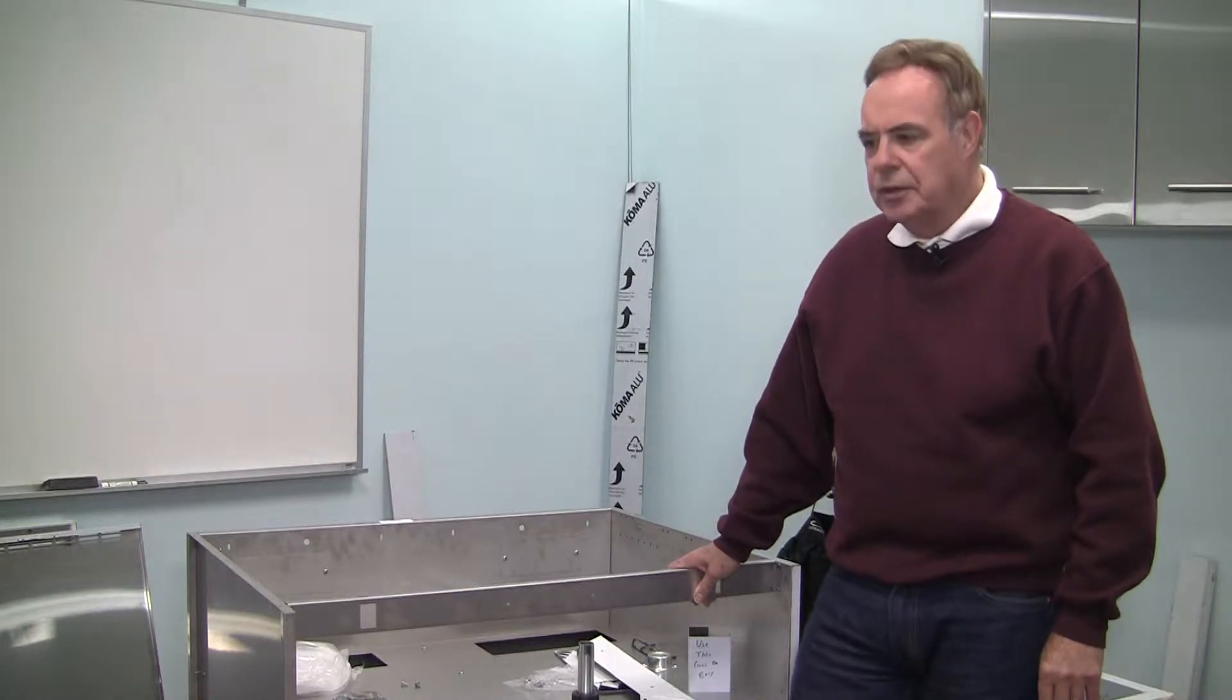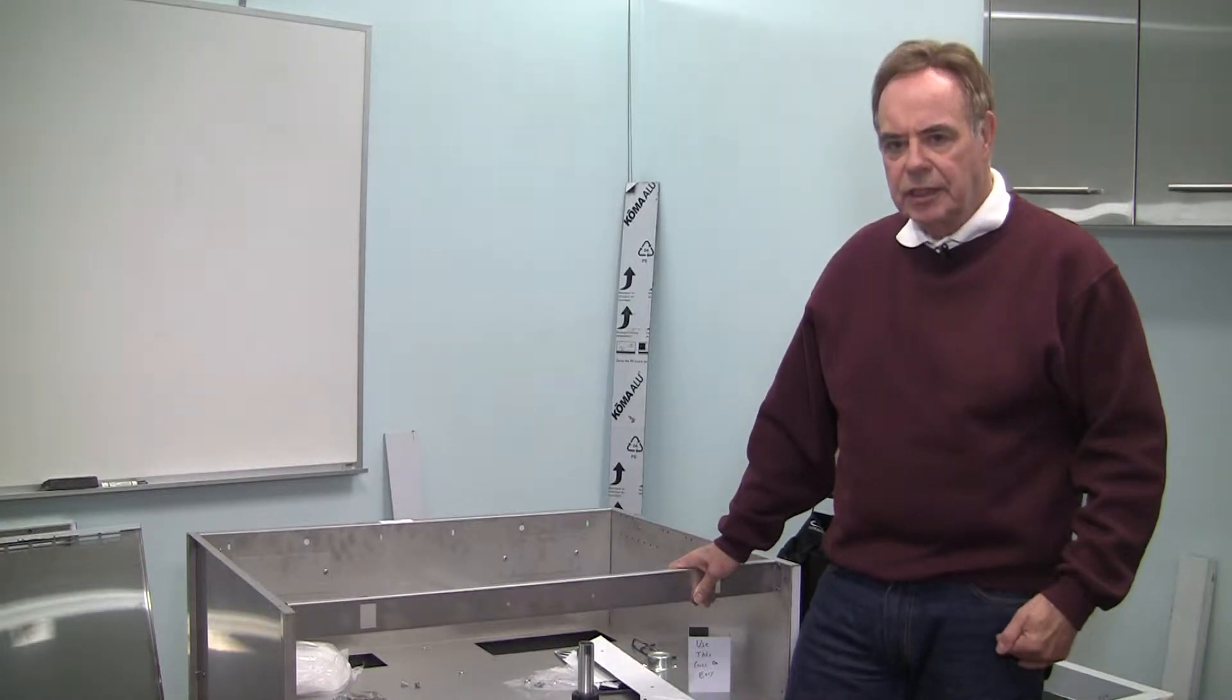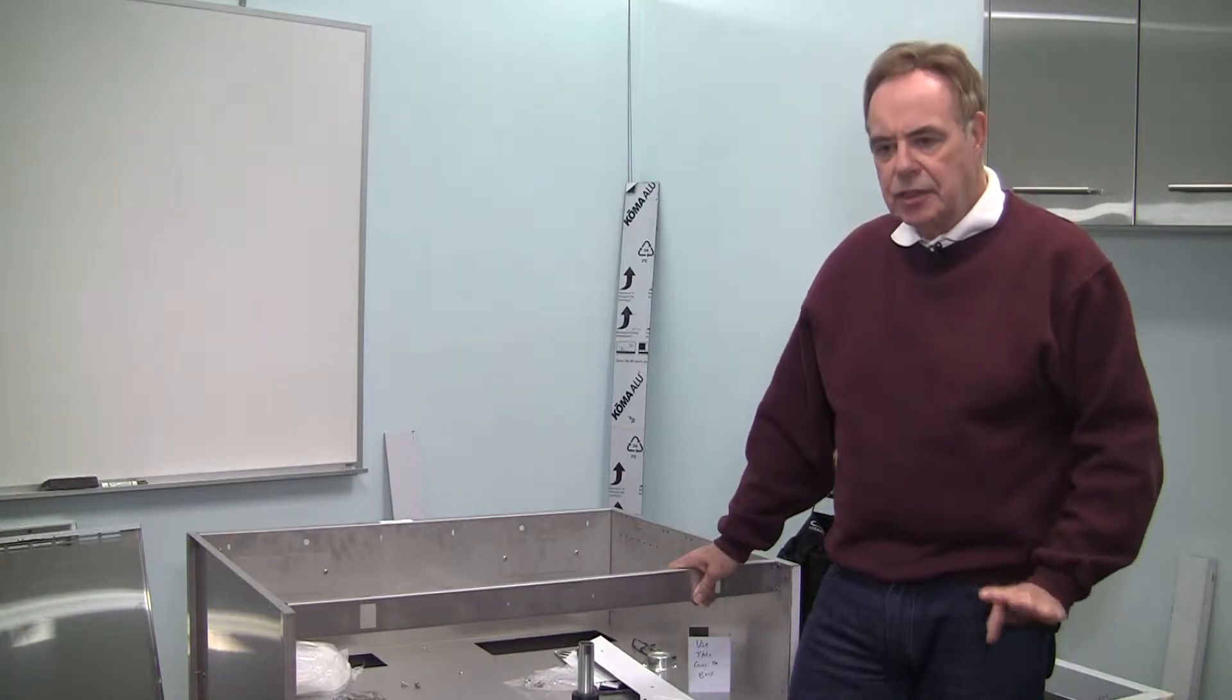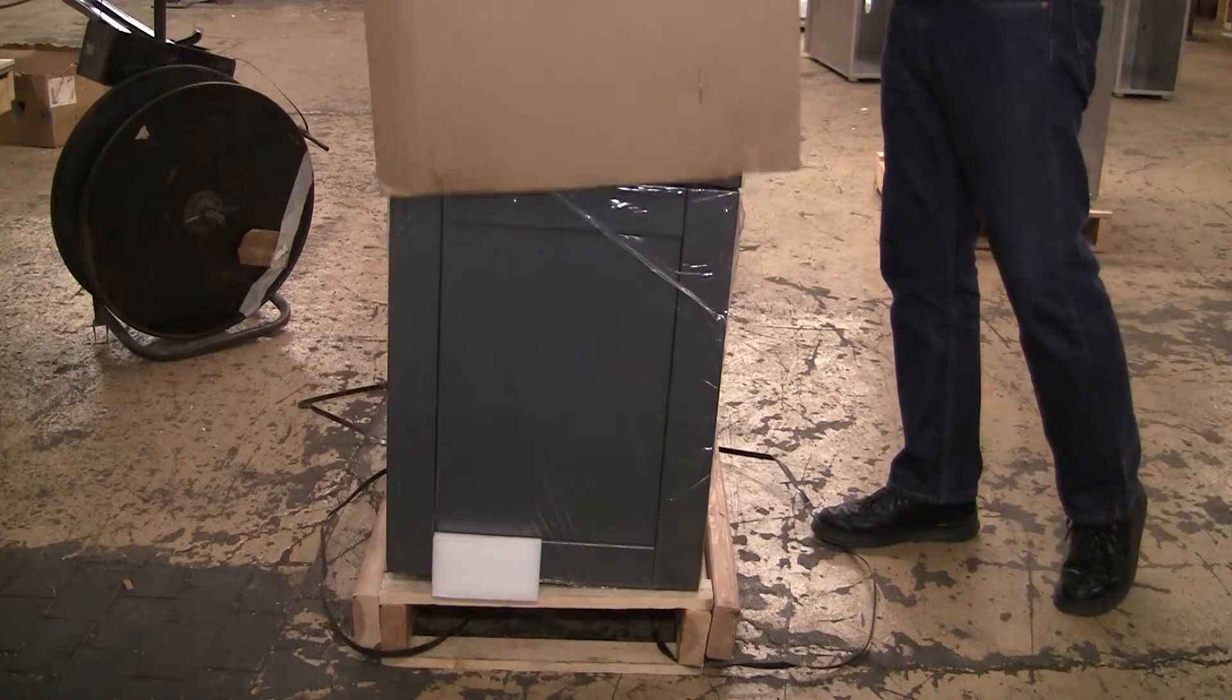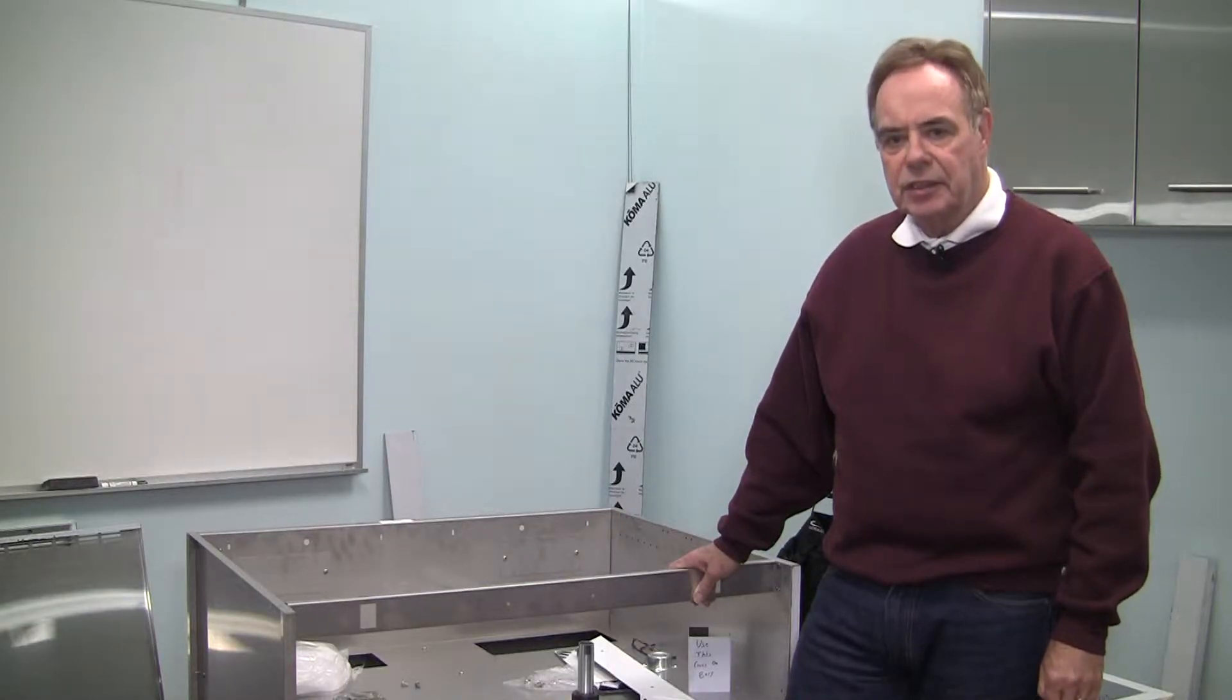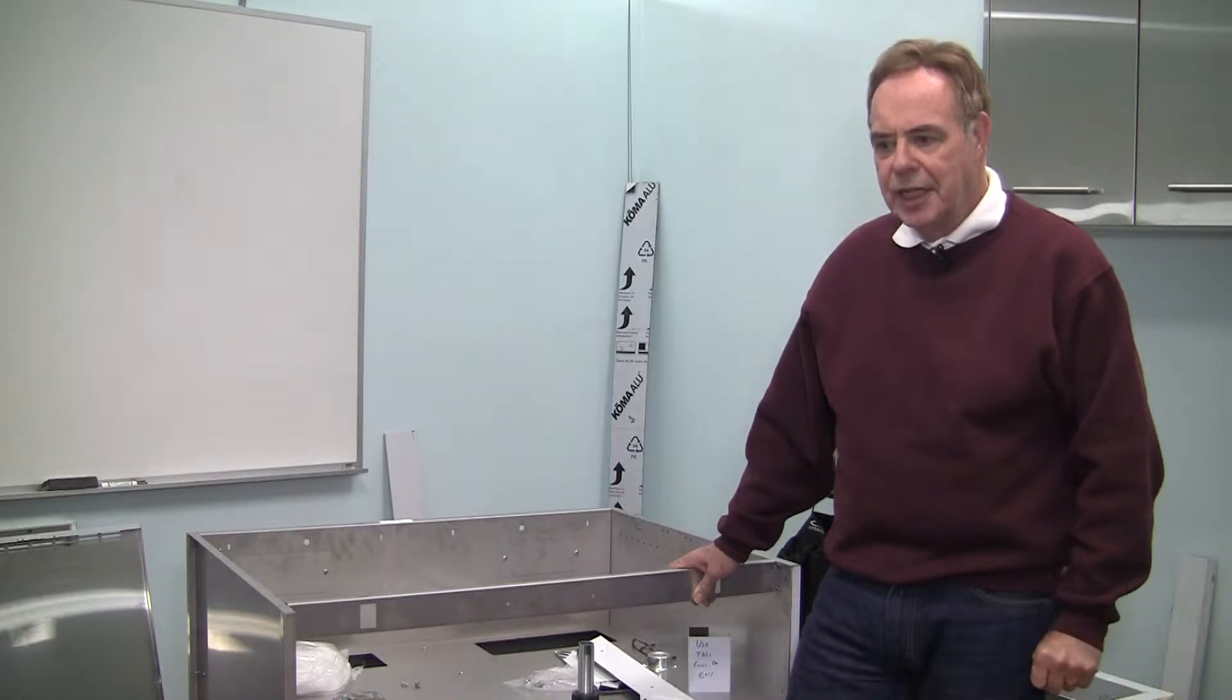The first thing we're going to do when you are making an installation is to line the cabinets up still in the box in the order that they're going to be assembled. This way, there is less chance of losing parts and screws and handles.